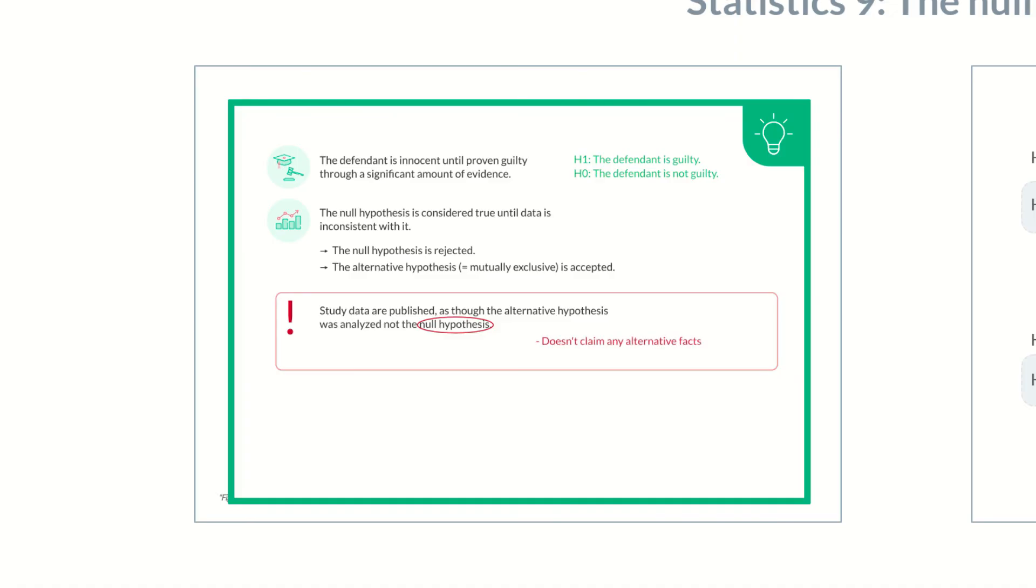The null hypothesis doesn't claim any alternative facts and also doesn't provide any additional information to the alternative hypothesis. Hypotheses that don't follow these rules are known as competing hypotheses.